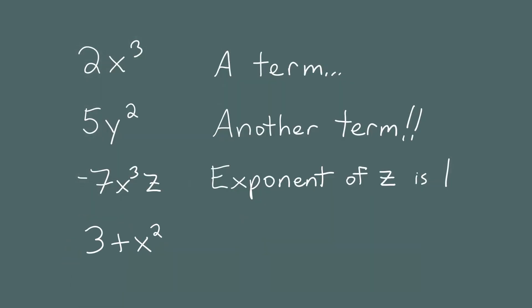3 plus x squared is not a term, because we're adding the number and the variable parts. This is an algebraic expression, but it's not a term. However, this expression is a sum of two terms: 3 is a term, and x squared is a term.